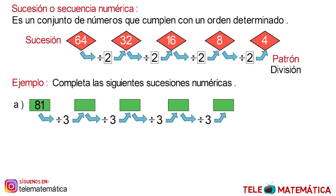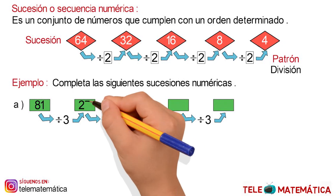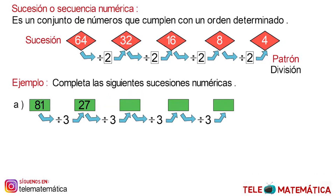We divide 81 by 3 and obtain 27. We divide 27 by 3 and obtain 9. We divide 9 by 3 and obtain 3. And we divide 3 by 3 and obtain 1. This would be the completed succession.